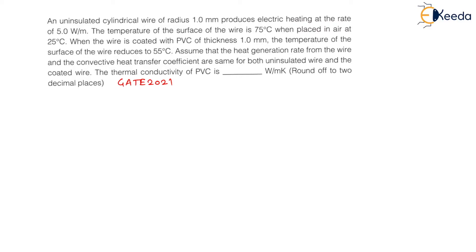So let us understand the question. An uninsulated cylindrical wire of radius 1 mm produces electric heating at the rate of 5 Watt per meter. It is electric heating, that is heat generated per unit length. Electric heating is 5 Watt per meter. Let us draw this wire first — a cylindrical wire of 1 mm radius.